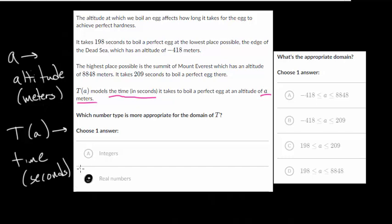Our domain is not skipping from one whole number to the next. And when deciding what our appropriate domain is, we want to see what is the lowest height and what is the highest place. And for our domain, we're looking for meters here. So a is in meters. And when we look at our information, it takes 198 seconds to boil it at the lowest possible place. But that is -418 meters. That's the edge of the Dead Sea.